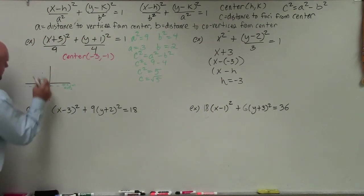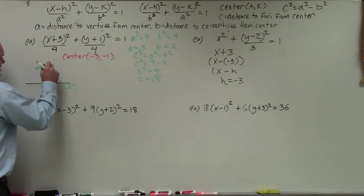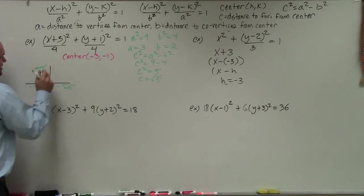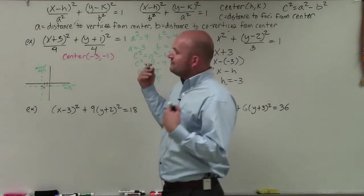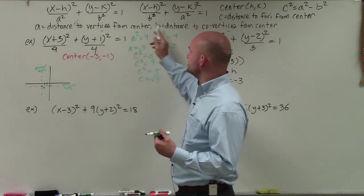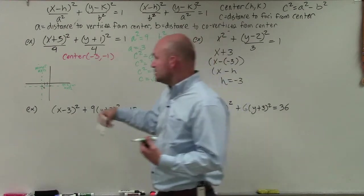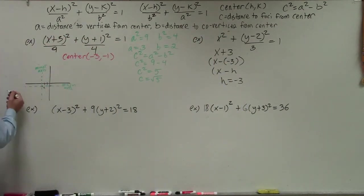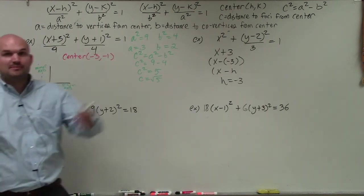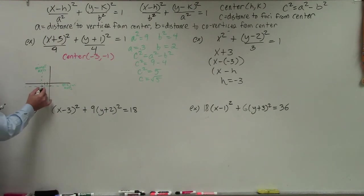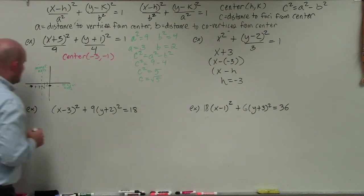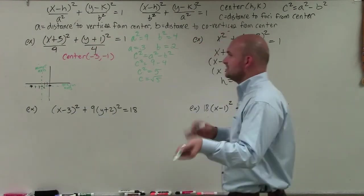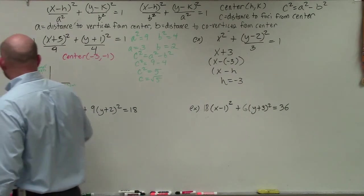I'm just plotting the information so I know where it is, not really graphing formally. So I'll plot the minor axis perpendicular to the major axis. To find my vertices, the distance from the vertices to the center is a, which in this case is 3. I go to my center and move along the major axis — 3 units to the right and 3 units to the left, because an ellipse has endpoints to the left and to the right. I'll go ahead and label those as my vertices.